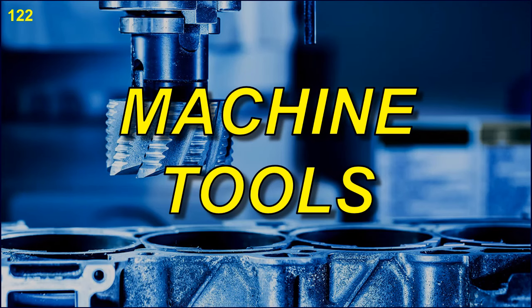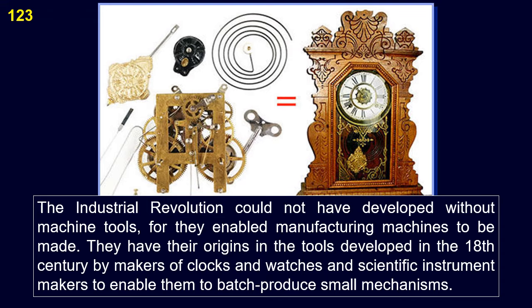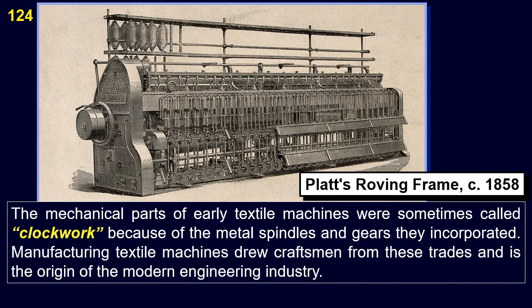Machine Tools. The industrial revolution could not have developed without machine tools, for they enabled manufacturing machines to be made. They have their origins in the tools developed in the 18th century by makers of clocks and watches and scientific instrument makers to enable them to batch-produce small mechanisms. The mechanical parts of early textile machines were sometimes called clockwork because of the metal spindles and gears they incorporated. Manufacturing textile machines drew craftsmen from these trades and is the origin of the modern engineering industry.